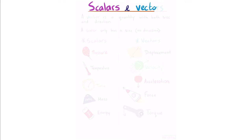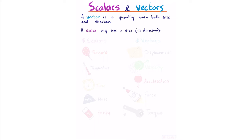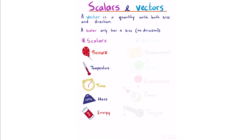Scalars and vectors. A vector is a quantity with both size and direction; a scalar only has size, no direction. Examples of scalars include pressure, temperature, time, mass and energy. Now time is one that you could possibly argue, but at this level of study we assume it to be a scalar.